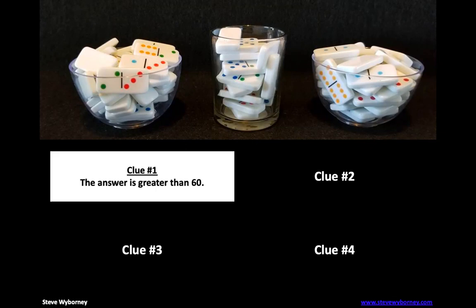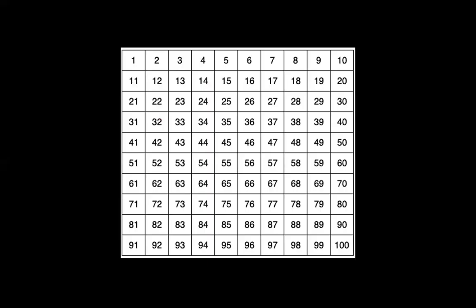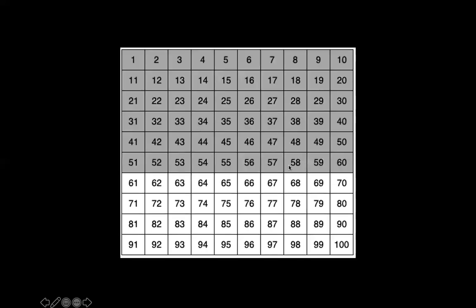The first clue. The answer is greater than 60. So if you had an estimate less than 60, then you're going to want to change your estimate, which is okay. Go ahead and write it down. I've got a hundreds chart here. Now I did say it's greater than 60, so I'm going to cross out one all the way to 60 because it's greater than 60. So it can't be sixty. There we go. I've crossed those out. If your guess was in here, go ahead and change your estimate. That's what we do in math. When we get more information, we fine tune our estimates.